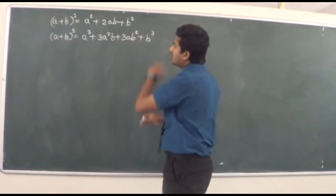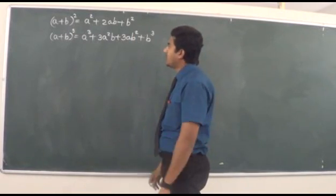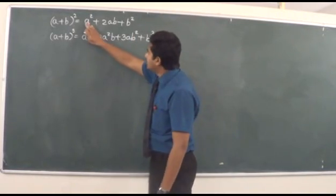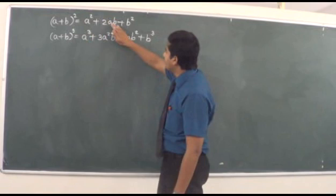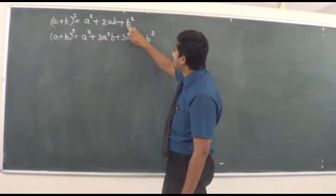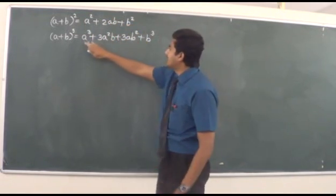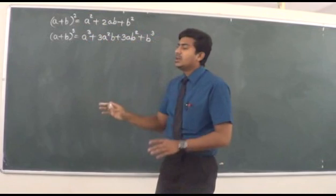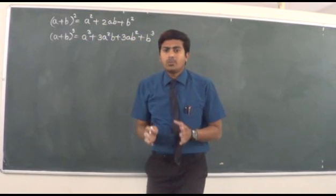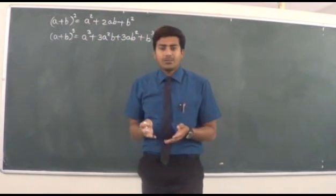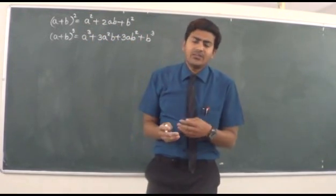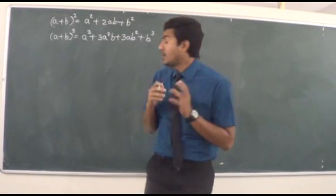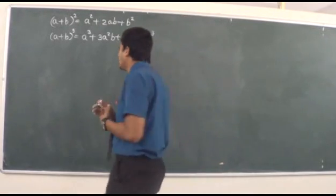Now we will see how we calculate the terms of this particular expansion. The terms follow a particular pattern: a², ab, b² for (a+b)², or a³, a²b, ab², b³ for (a+b)³. They follow a particular pattern in every binomial expansion.